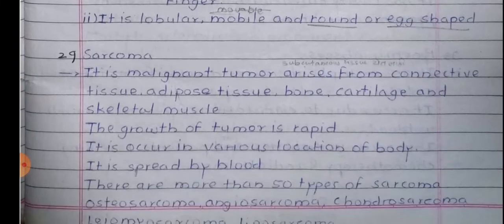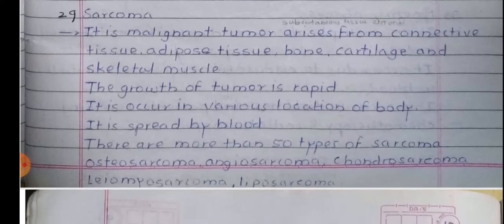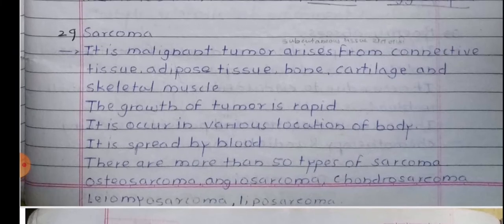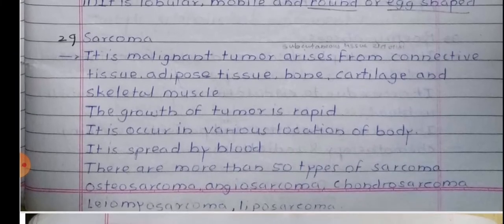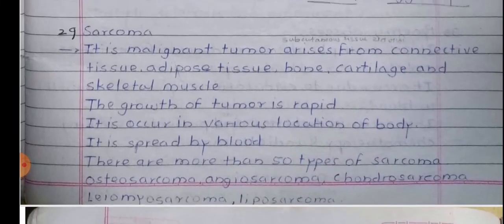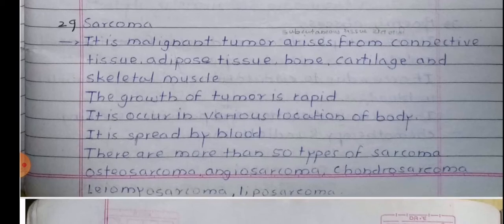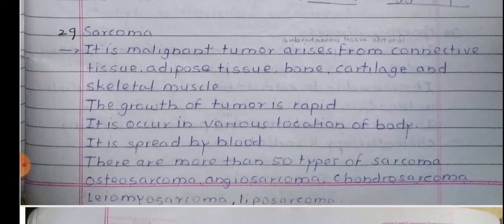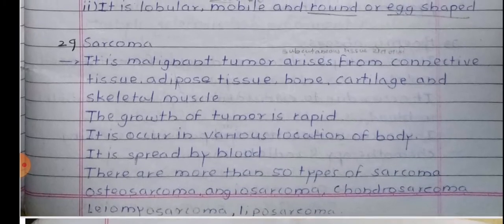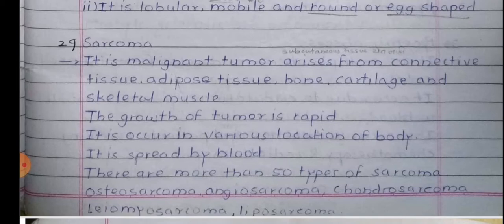Sarcoma: It is a malignant tumour which arises from connective tissue, adipose tissue, bone, cartilage, and skeletal muscles. The growth of the tumour is rapid. It occurs in various locations of the body and spreads by blood. There are more than 50 types of sarcoma. Some common sarcomas are osteosarcoma, angiosarcoma, chondrosarcoma, leiomyosarcoma, and liposarcoma.